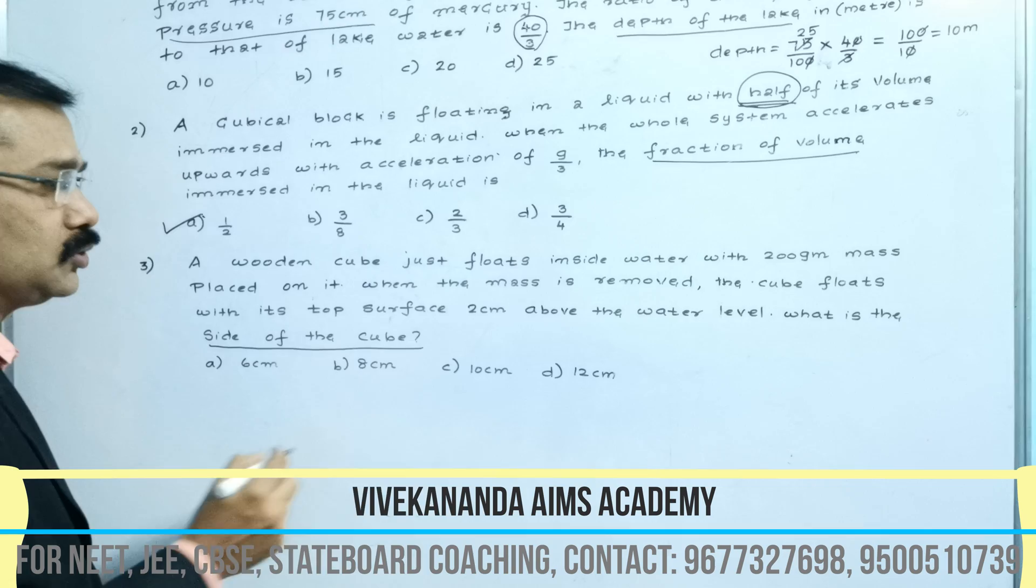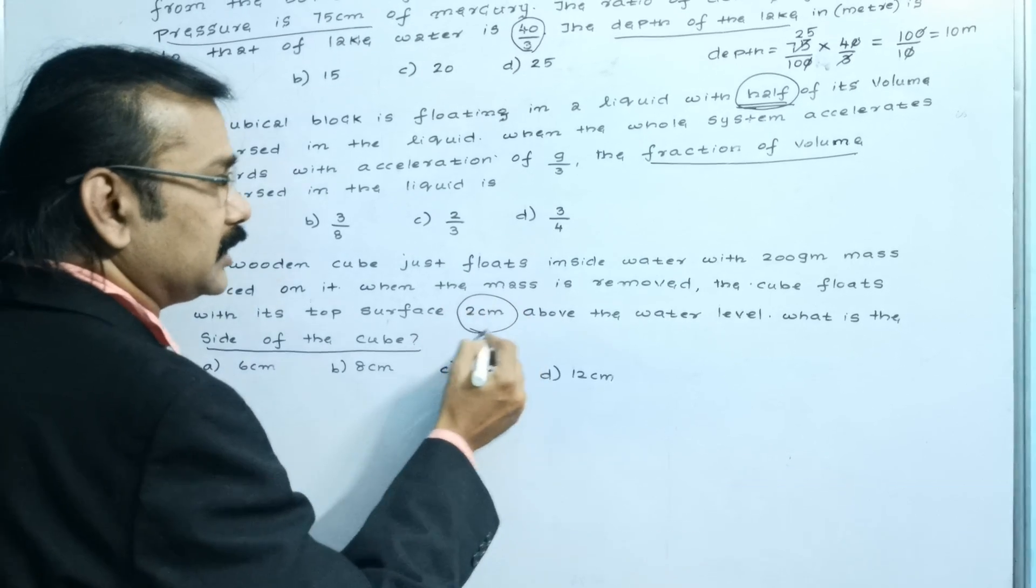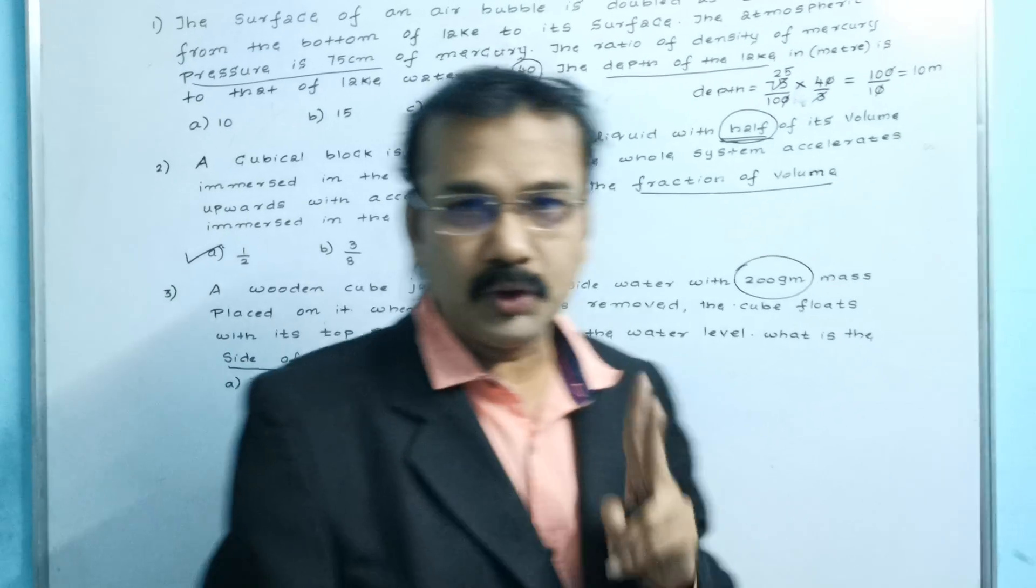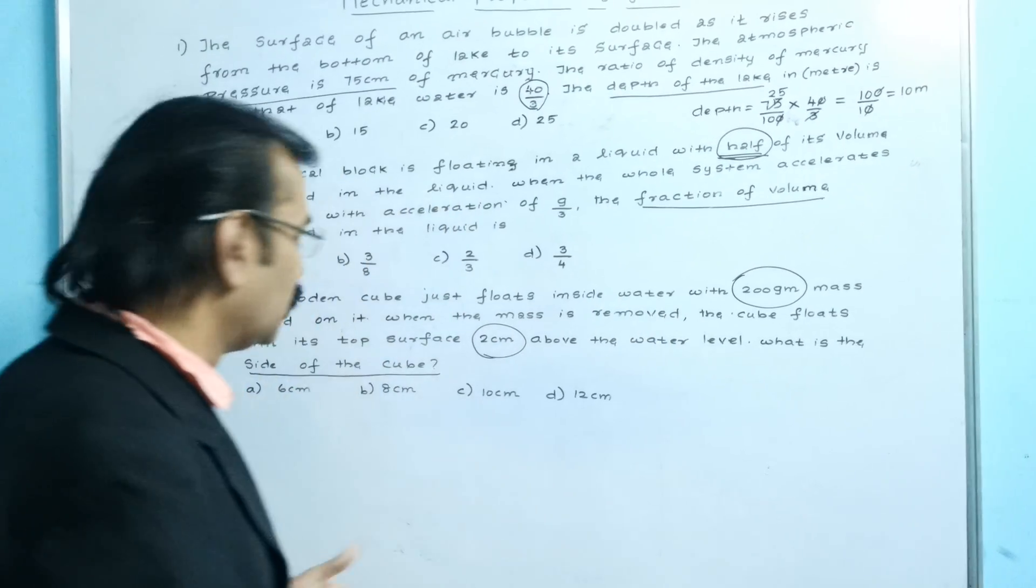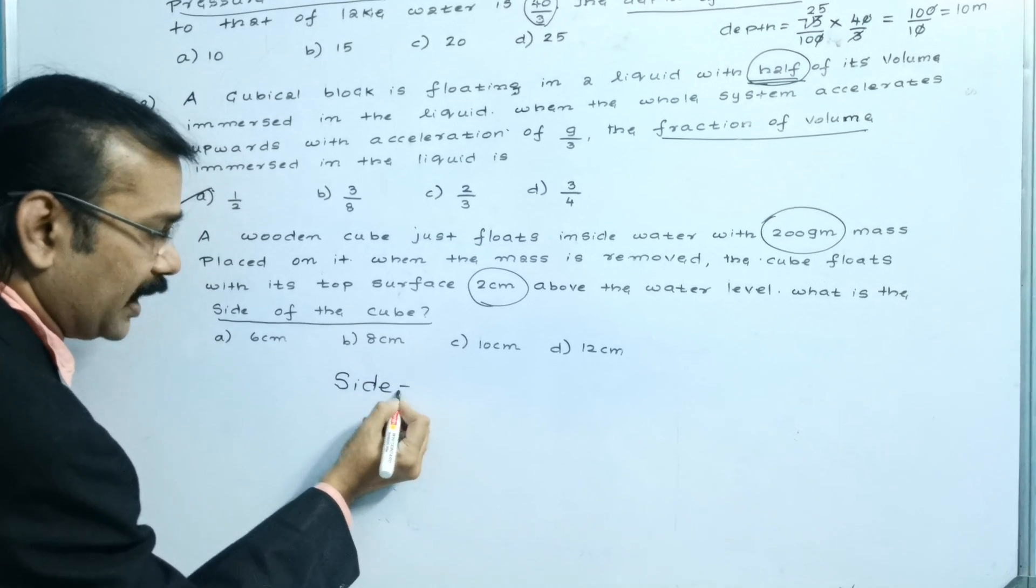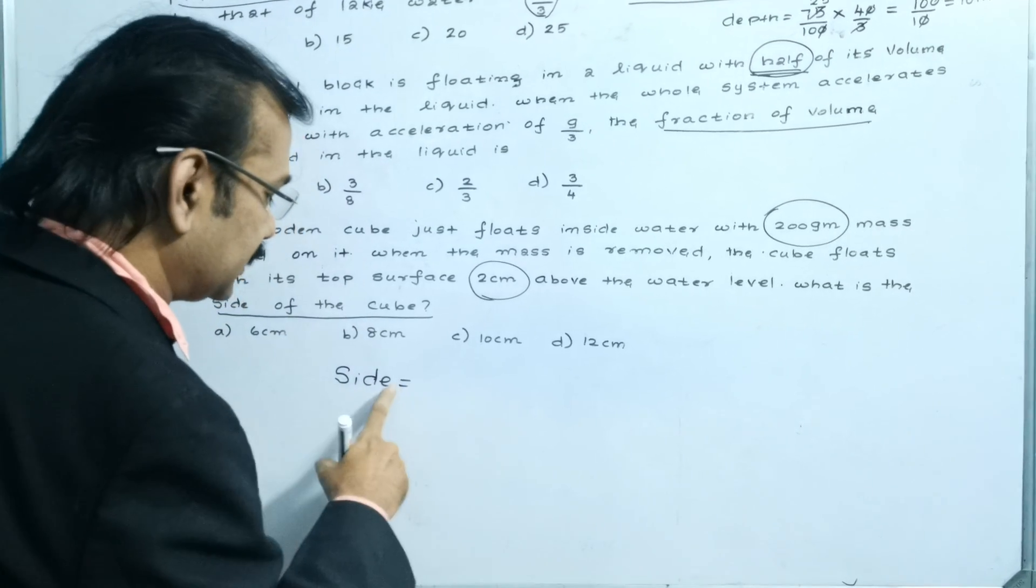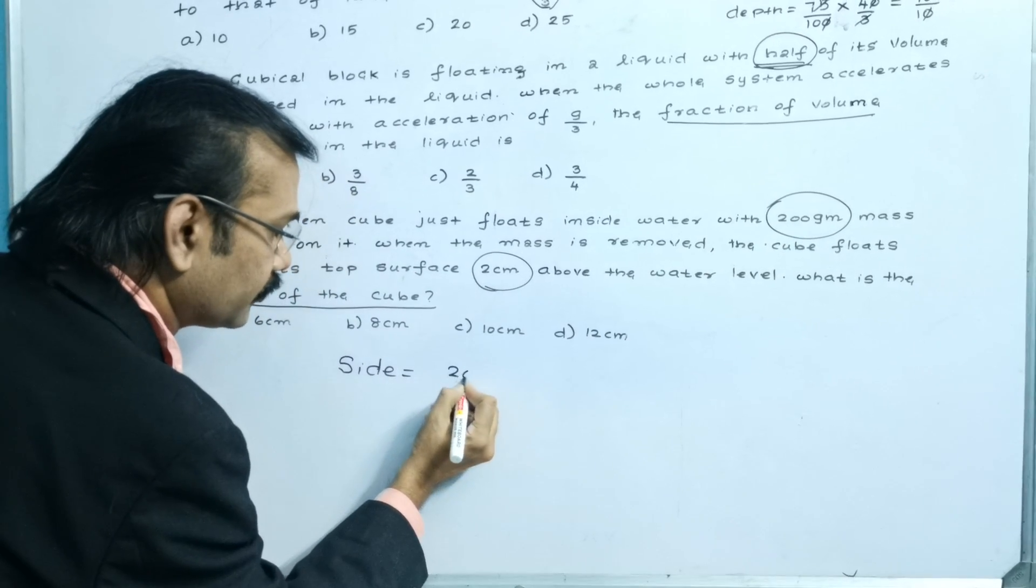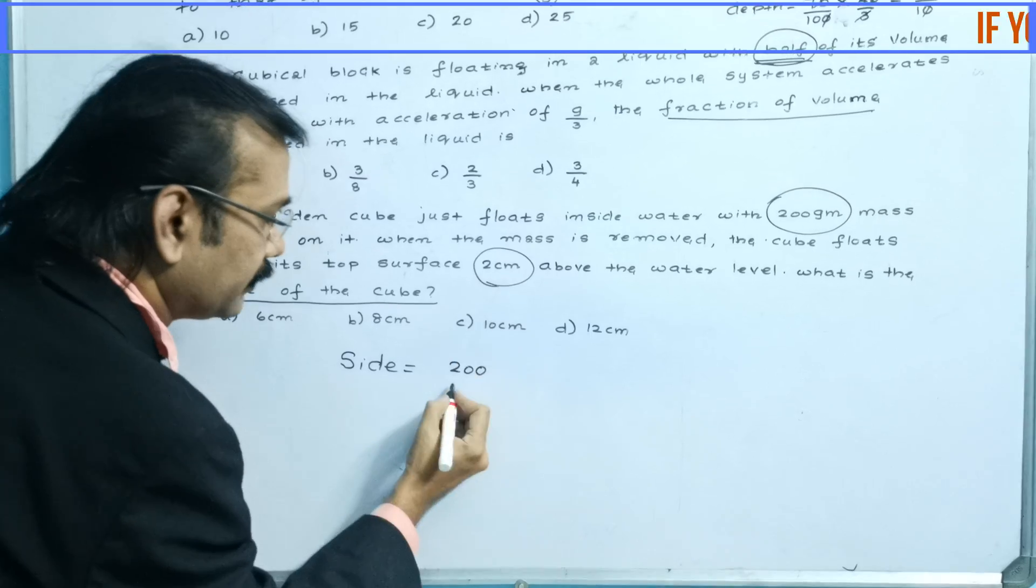And there are 2 numbers here. See the 2 numbers: One is 200 grams and the other one is 2 cm. Remember this - there are only 2 numbers. To find the side of the cube, what you have to do? Take your pen and write down: Side is equal to, what is the number here? You take 200, and what is the next number? 2.